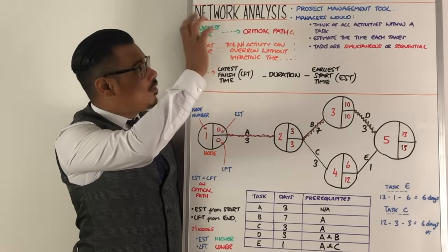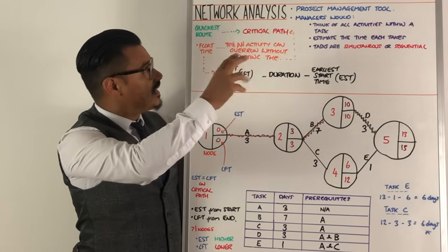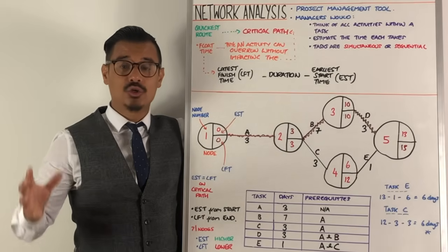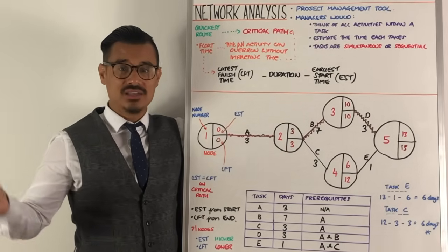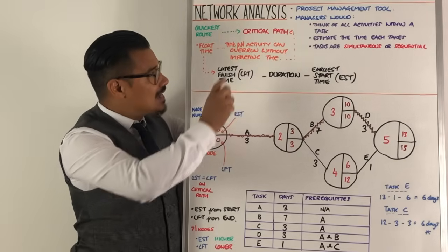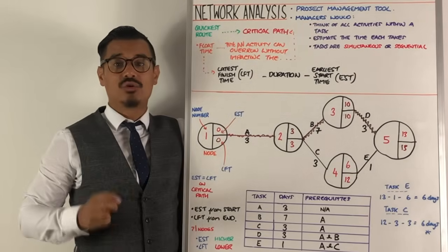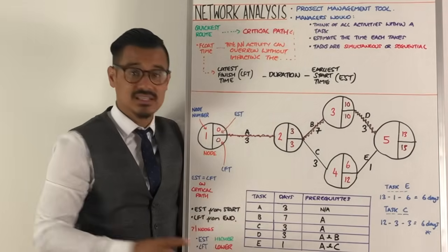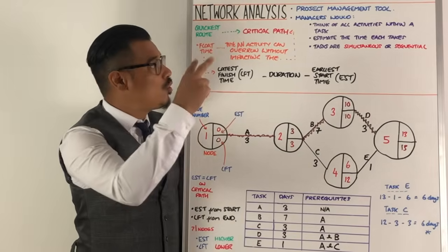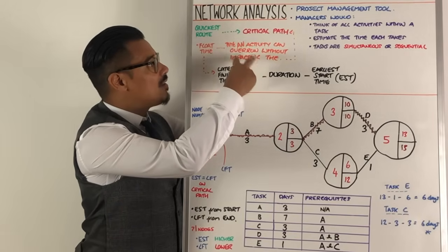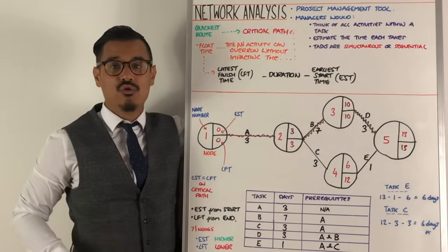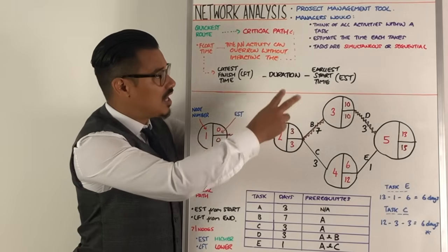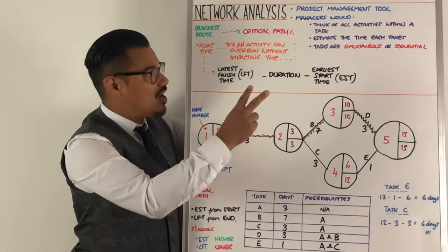The idea with network analysis is once your managers have got all of that data, they're trying to work out the quickest route to complete the project. And that is what's called the critical path, why it's sometimes called critical path analysis. Other important things to know related closely to critical path is that some tasks will have what's called a float time. And that is essentially the time an activity, one of those tasks, can overrun without impacting that critical path, without impacting the quickest route. And there is a formula for float time. The formula is the latest finish time, sometimes called the LFT, minus the duration of the task or the activity, minus the EST, the earliest start time.